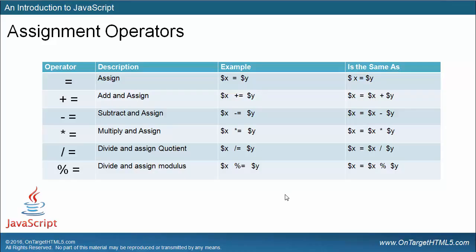The assignment operators include: the equal sign, which assigns a value to a variable; the plus-equal, which adds and assigns; the subtract-equal, which subtracts and assigns; the multiplication-equal, which multiplies and assigns; the divide-equal, which divides and assigns; and the modulus-equal, which assigns the modulus remainder. The ones we use most often are the equal, the plus-equal, and the subtract-equal. The others are nice to know but not used as often.